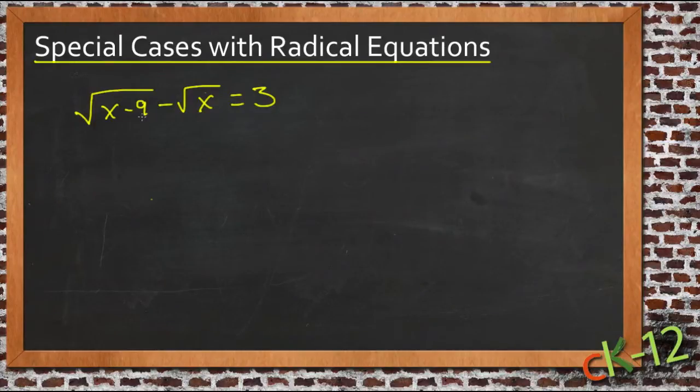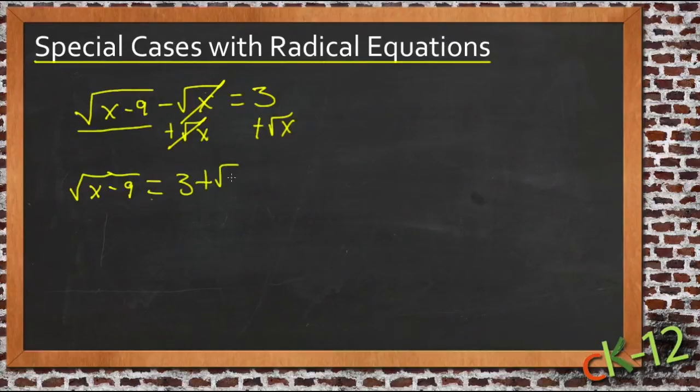So first thing we need to do is to isolate one of our square roots here. The original equation is square root of x minus 9 minus square root of x equals 3, so we're going to isolate that square root of x minus 9, and to do that we'll add root of x to both sides. So we'll cancel over here, and we'll have root of x minus 9 is equal to 3 plus root of x.